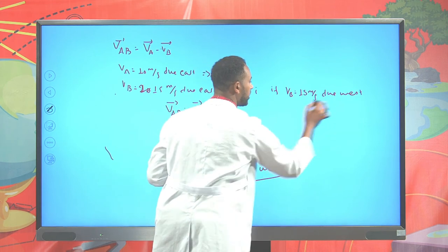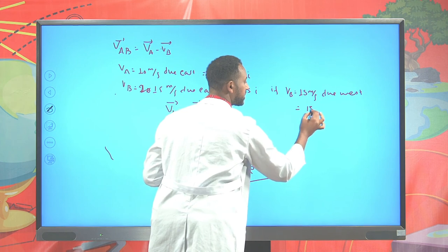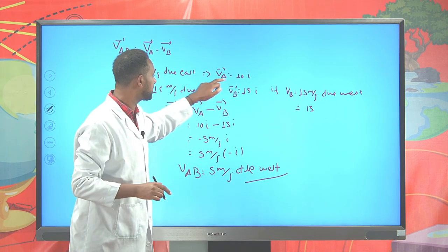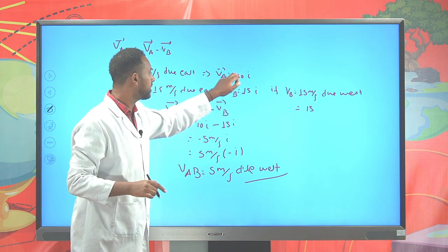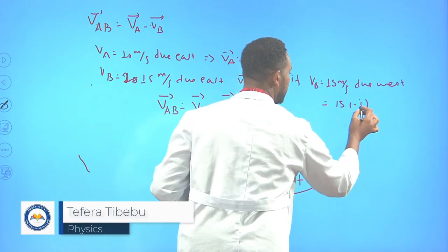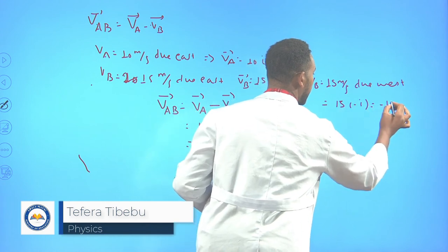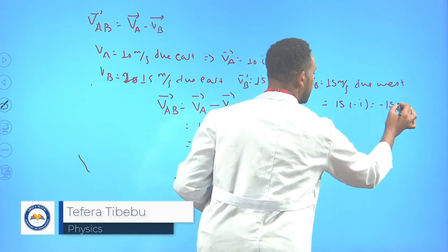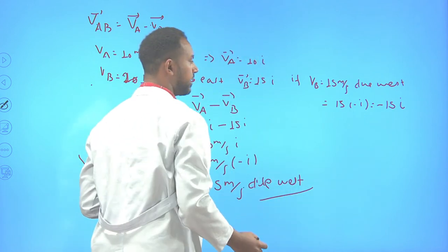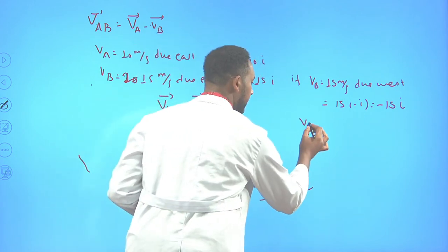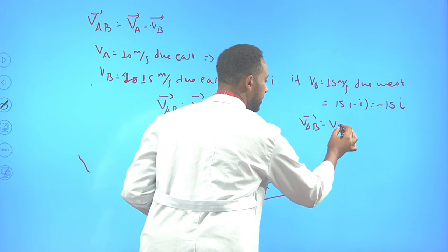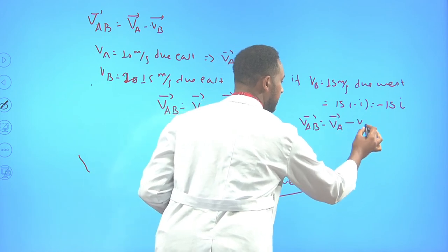Because we represented î as east, the negative of i represents west. You can put V_B = −15î. Substituting into V_AB = V_A − V_B: 10î − (−15î) = 25î. The relative velocity of car A with respect to car B is 25î m/s.